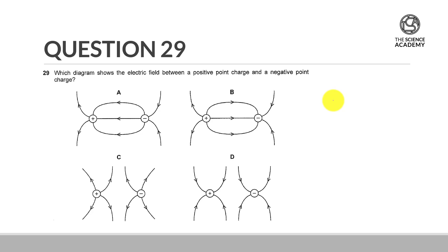In question 29, we are shown four diagrams, and we are asked which diagram shows the electric field between a positive point charge and a negative point charge.